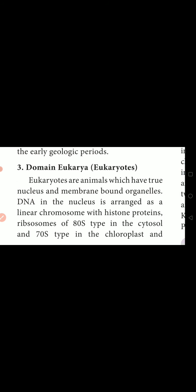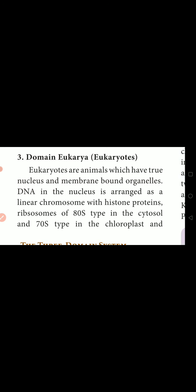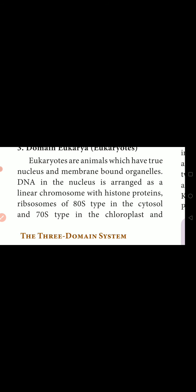The next one is Domain Eukarya, or we can also call them eukaryotes. Eukaryotes are organisms which have a well-defined nucleus. They have membrane-bound organelles. DNA in the nucleus is arranged as linear chromosomes with histone proteins. The chromosomes are arranged as rows — that is because of linear chromosomes with histone proteins.